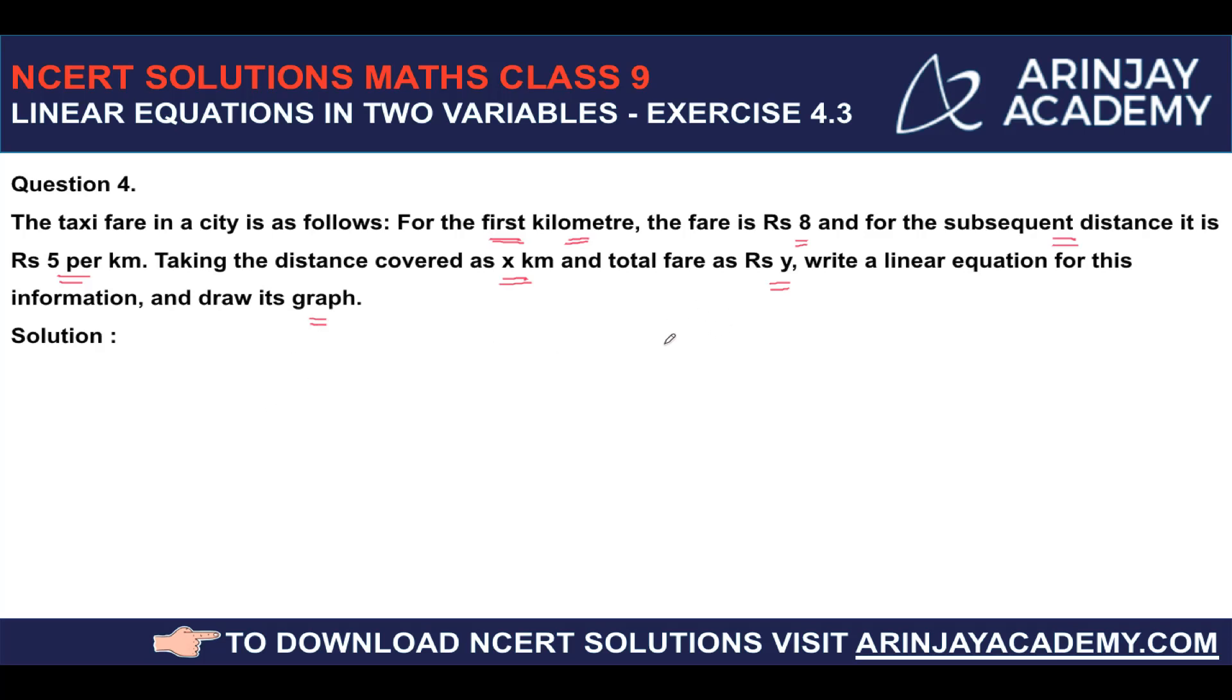So what it is saying is that there are two points, let's say point A and point B. The total length of distance between these two points is x kilometers.